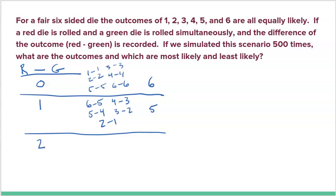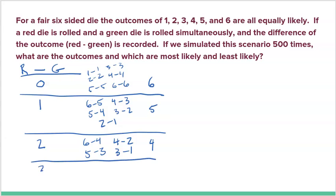The difference could also be two: six minus four, five minus three, four minus two, and three minus one — four different ways. Could the difference be three? That would be six minus three, five minus two, and four minus one — three different outcomes resulting in a difference of three.